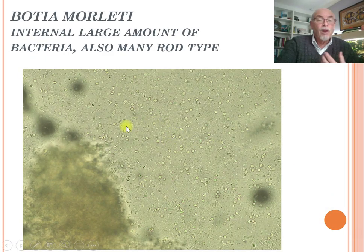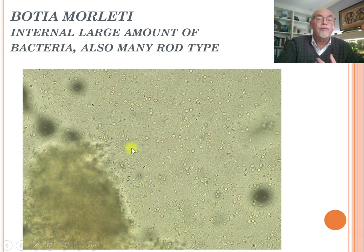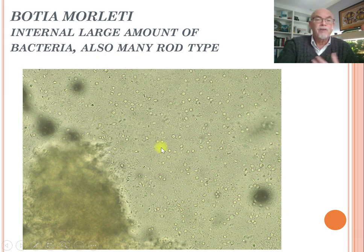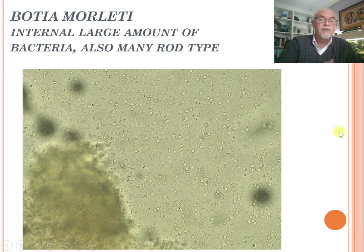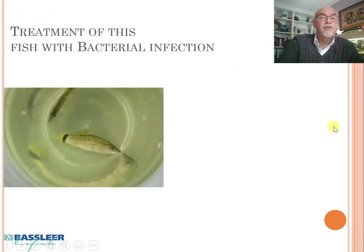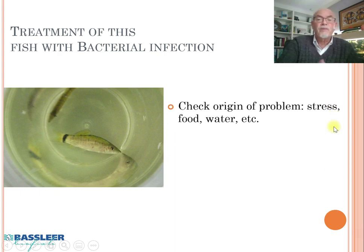We also found a lot of bacteria in the internal organs. Next to the liver we find a lot of rod-shaped bacteria and round-shaped bacteria — so different kinds of bacteria — which is probably the cause of the infection. That's why we decided we're going to have to treat this bacterial infection with an antibiotic.